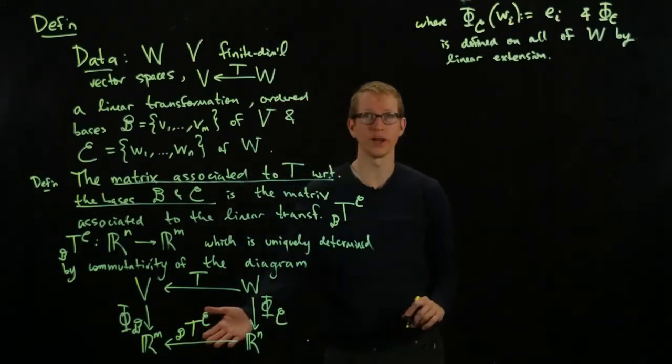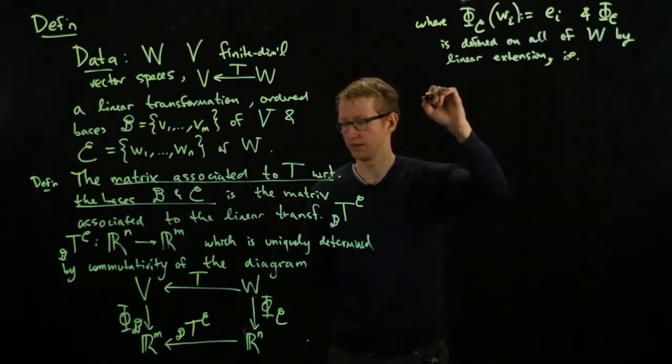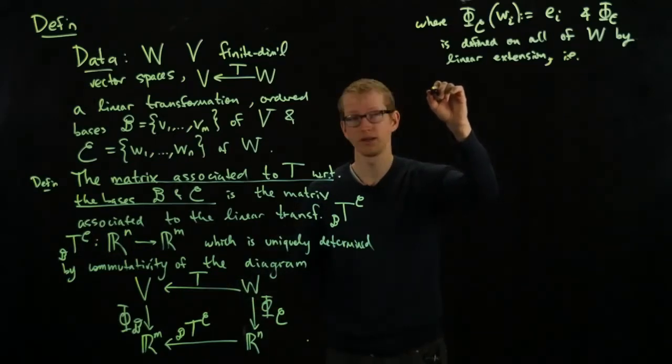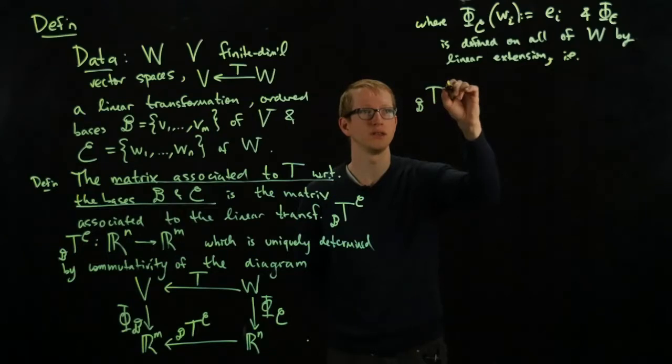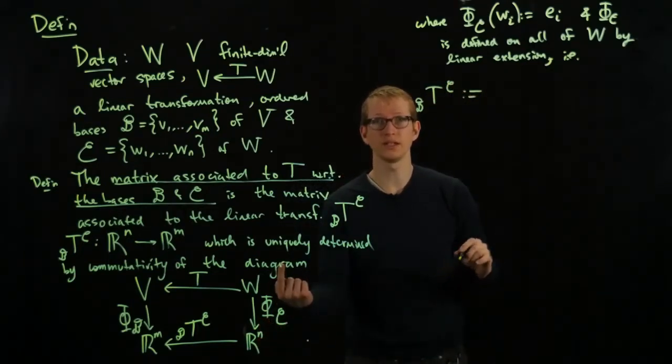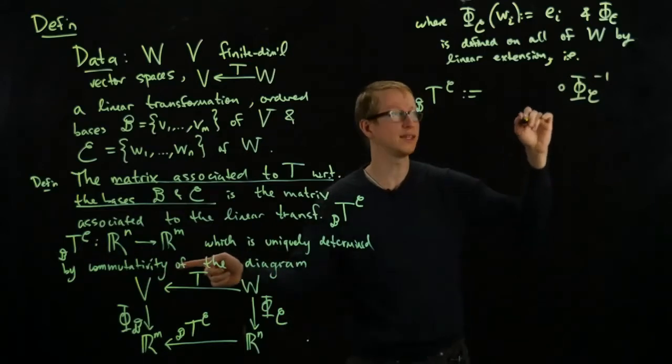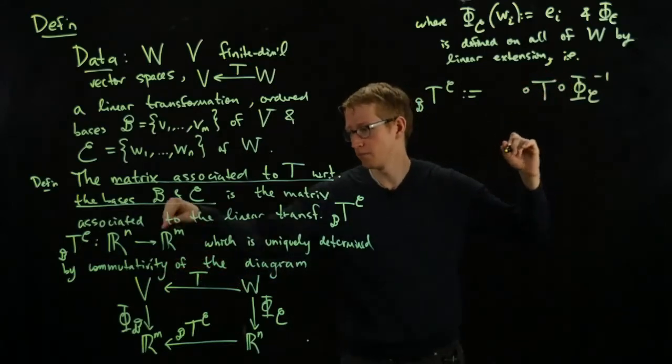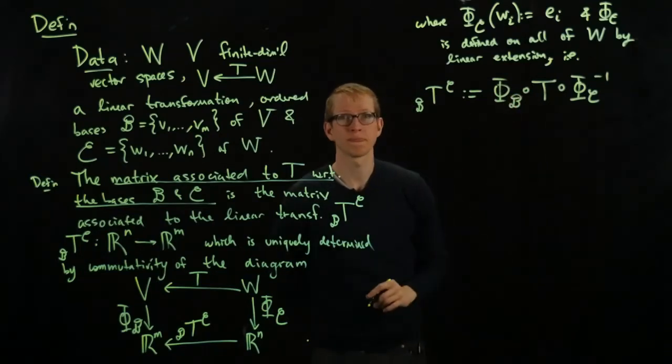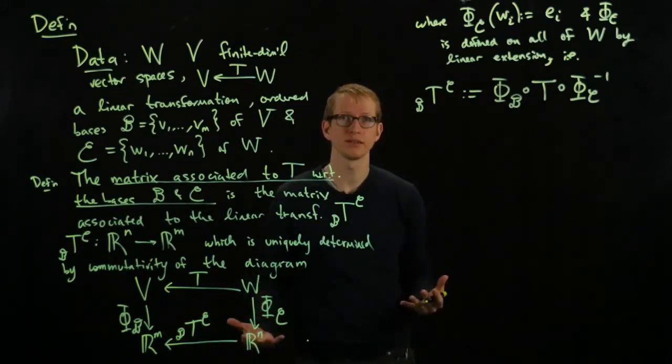So this is how we can write this. Or explicitly, i.e., since these functions, since these linear transformations are invertible, we can write T_B^C is defined to be, take the inverse of this linear transformation, and that's the first one so we put it on the right, composed with T, and then back down along this linear transformation. So this linear transformation is one from R^n to R^m, and we can make sense of the matrix there.